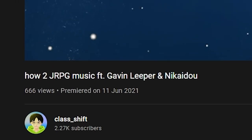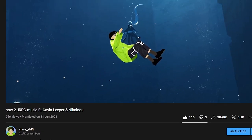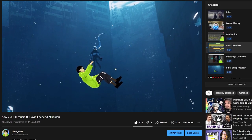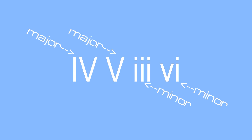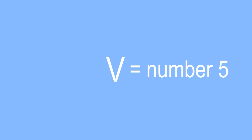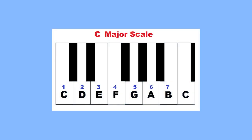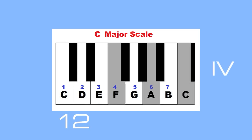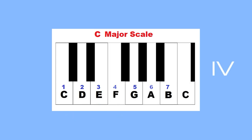If you haven't watched my JRPG Music Theory video yet, I'll do a quick recap. For those of you who don't know how chords are being noted, basically the capital letter means major and the small letter means minor. The number that it is representing shows where the root note of the chord actually is.